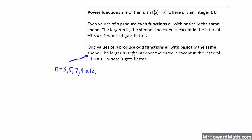Odd values of n produce odd functions, all with basically the same shape. The ones that have the same shape are raised to the 3rd, 5th, 7th, 9th, 11th power, etc. — any odd integer greater than 1. Because if you raise it to 1, x to the 1st power is just y equals x, which is the linear parent function shaped like a line. But when you raise to the power of 3, 5, 7, 9, they look like the basic cubic graph.